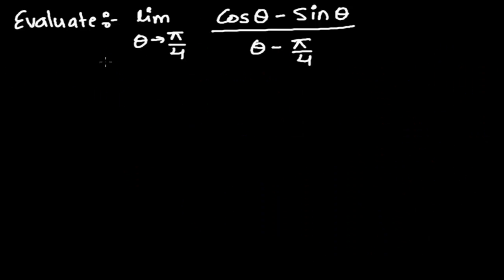We're going to evaluate the limit of this question. The problem is: limit when theta tends to pi by 4 of cos theta minus sine theta, whole divided by theta minus pi by 4. That is 45 degrees. We need to find out this limit.